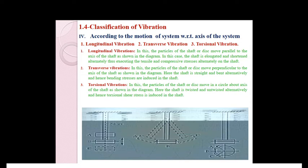In torsional vibration, the particles of the shaft or disc move in a circle about the axis of the shaft. The shaft is twisted and untwisted alternately, and hence torsional shear stresses are induced. So we can classify vibrations into three modes: longitudinal vibrations, transverse vibrations, and torsional vibrations.